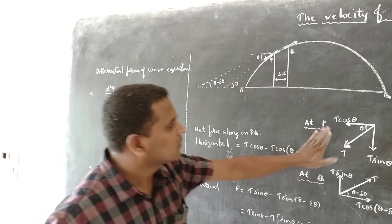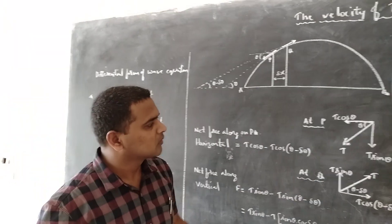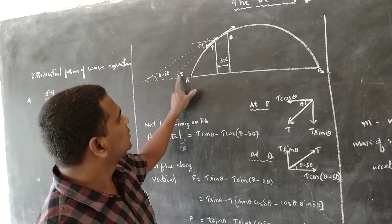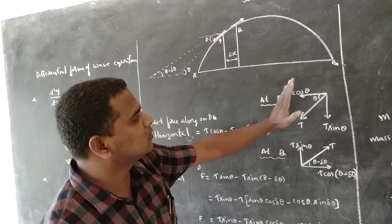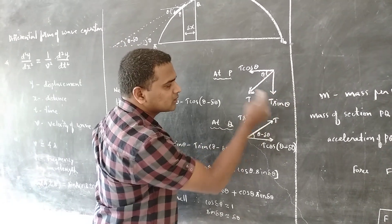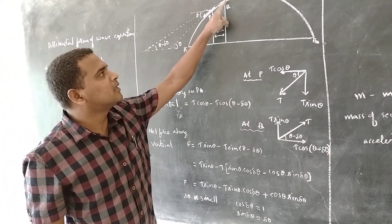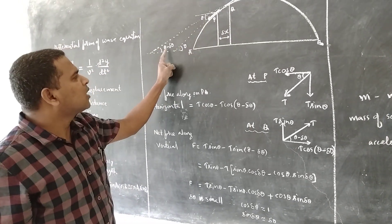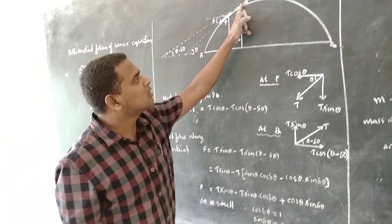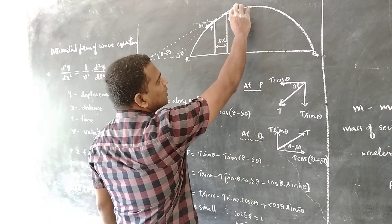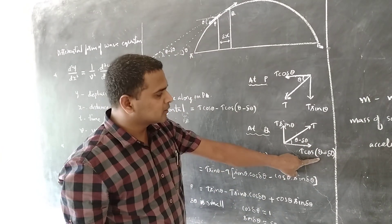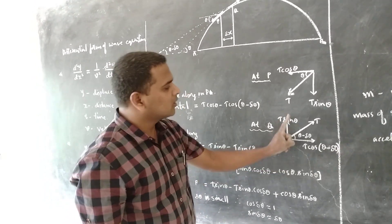The tension at P can be resolved into two components: the vertical component and the horizontal component. If the angle with respect to the horizontal is θ, then the horizontal component is T cos θ and the vertical component is T sin θ. Similarly, the tension at Q makes an angle (θ + Δθ) with respect to the horizontal, where (θ + Δθ) is greater than θ. Resolving tension at Q: the horizontal component is T cos(θ + Δθ) and the vertical component is T sin(θ + Δθ).